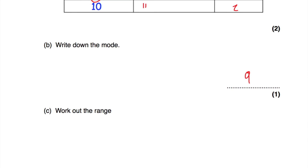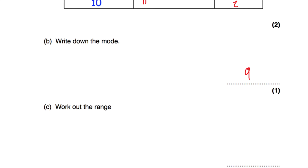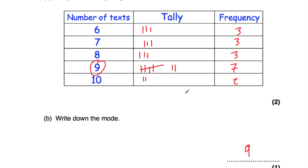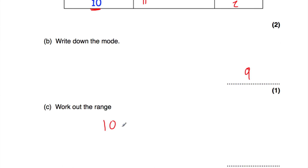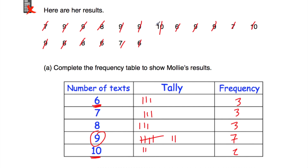Part C: work out the range. The range is the largest value take away the smallest value. The largest number of text messages received in one day was 10, and the lowest was 6. So the range is 10 subtract 6, which is equal to 4. The range of the number of text messages received is 4.